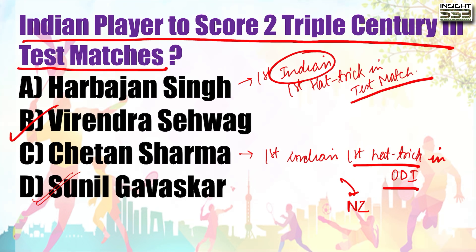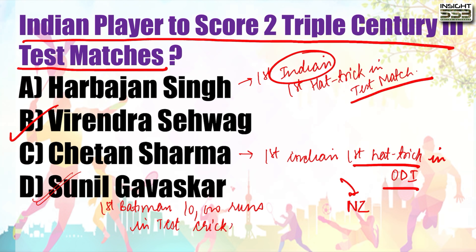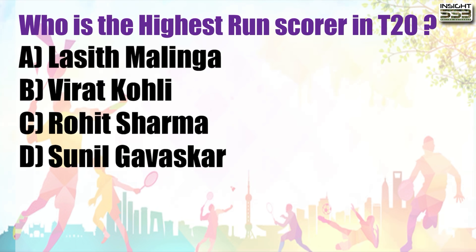Sunil Gavaskar is quite important because he was the first batsman to complete 10,000 runs in test cricket. So if someone asks who is the fastest or first to reach 10,000 runs in test cricket, the answer is Sunil Gavaskar.